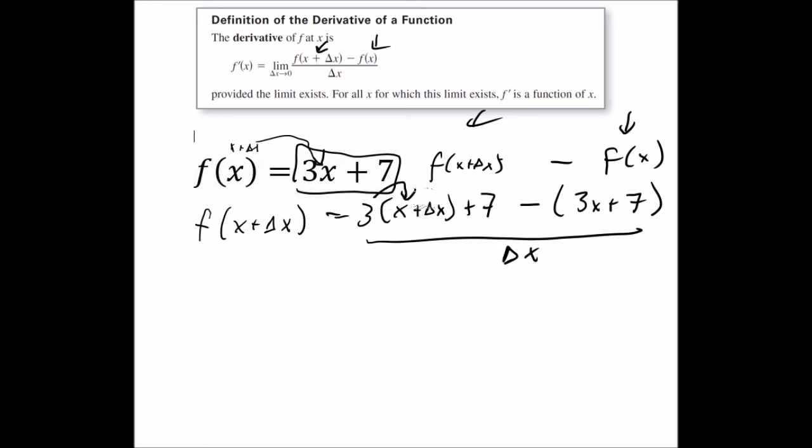So I'm going to distribute this first, and I get 3x plus 3 change of x plus 7. Then I'm going to distribute a negative sign. Negative 3x, negative times 7 is negative 7.